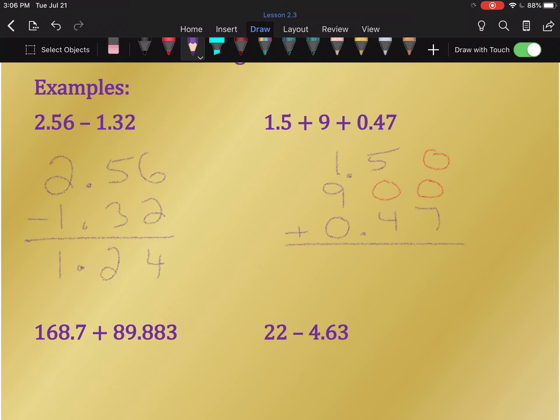Adding a 0 onto the end of a number after a decimal point does not change its value. Drop your decimal point straight down, and now you can treat this like a normal addition problem. 0, 0, 7 is 7. 5, 0, 4 added up make 9. 1 and 9 make 10.